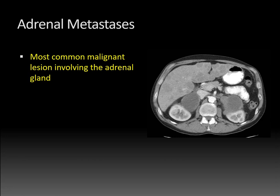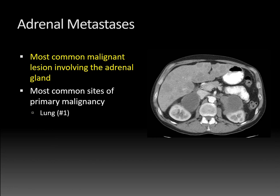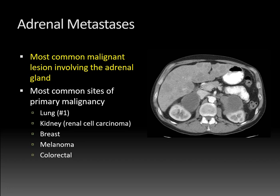Adrenal metastases are the most common malignant lesion involving the adrenal gland. The most common sites of primary malignancy that spread to the adrenal gland include lung — that's the most common — kidney, particularly renal cell carcinoma, breast cancer, melanoma, and colorectal carcinoma. Anytime you see masses that are bilateral and greater than 3 centimeters, you should be concerned about adrenal metastases.